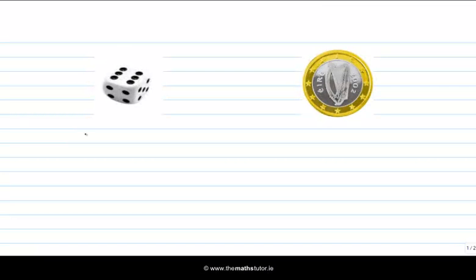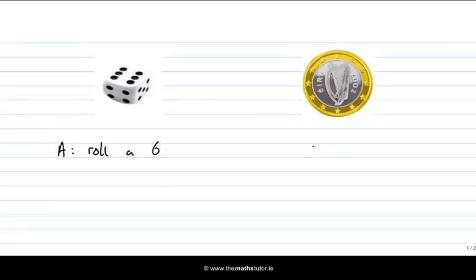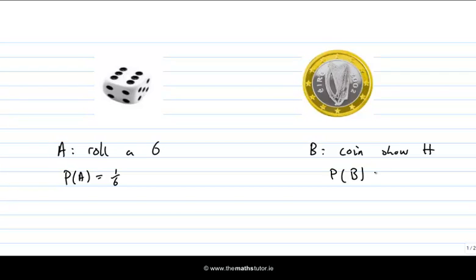Let's say that I have a die and a coin, and they're both fair. I'm going to conduct some experiments and look at some events. Event A is that I roll a 6, and event B is that the coin shows heads. From basic probability theory, the probability of event A is 1 over 6, and the probability of event B is a half.